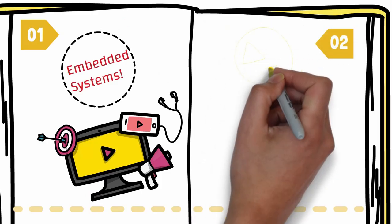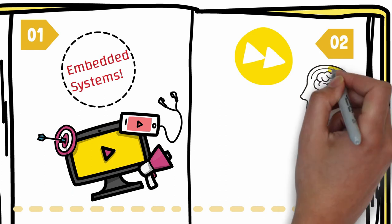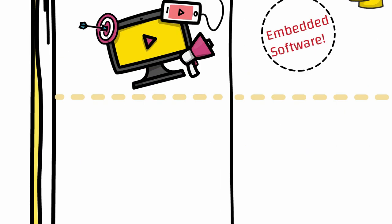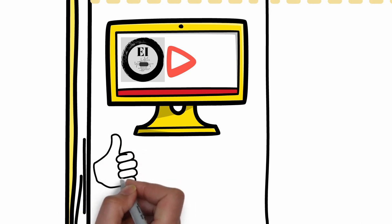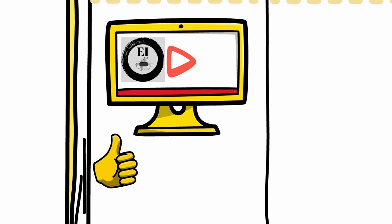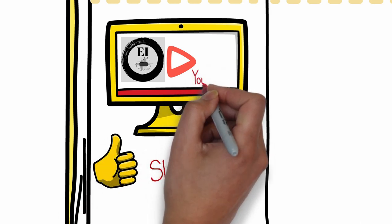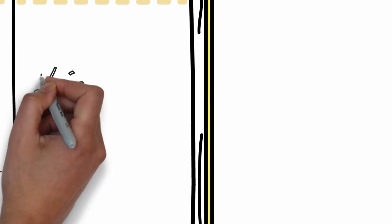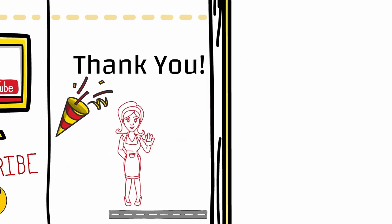In the next part of this series, we will learn about the brain of the embedded system — that is, the embedded software. If you liked this video, a like and subscribe would help the YouTube algorithm spread this course to more inventors like you. Thank you for watching, and I'll see you in the next one.